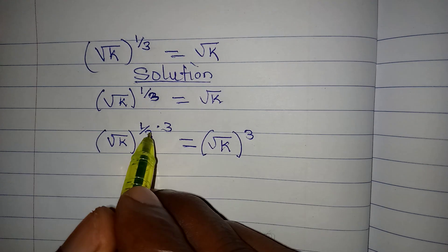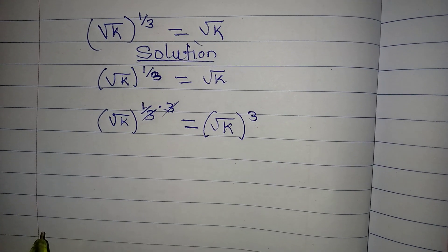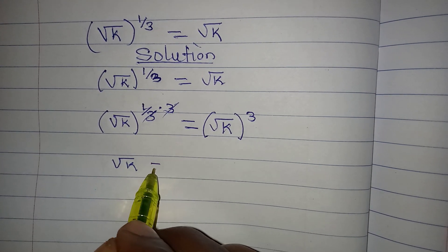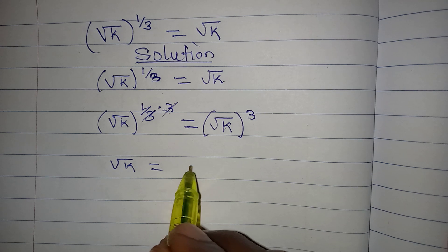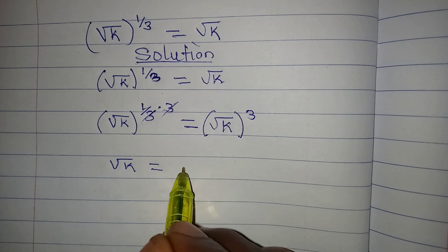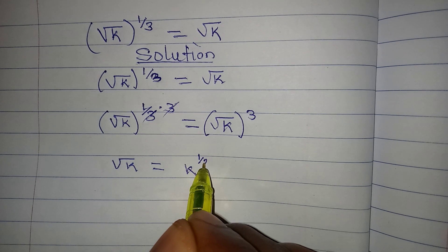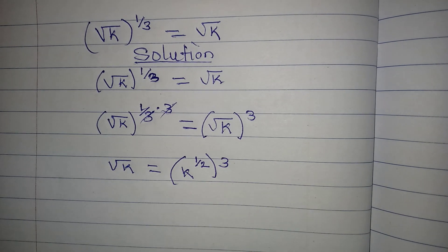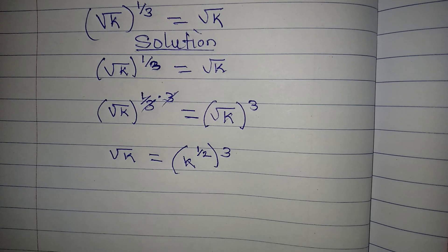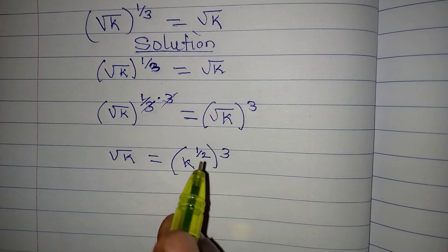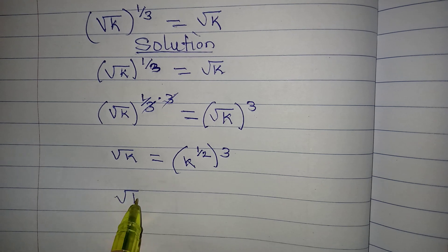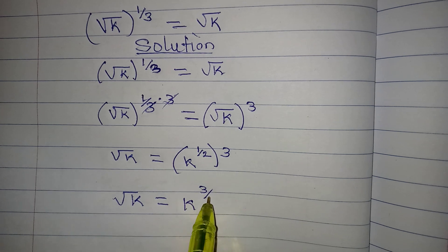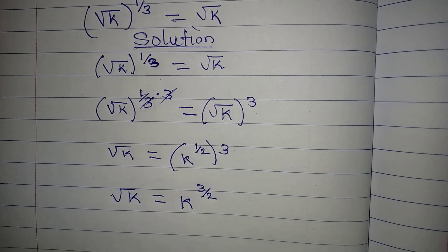The 1/3 and 3 cancel, so the square root of k is on the left. The square root of k is the same as k to the power of 1/2, and with the power of 3 outside, we multiply to get square root of k equals k to the power of 3/2.